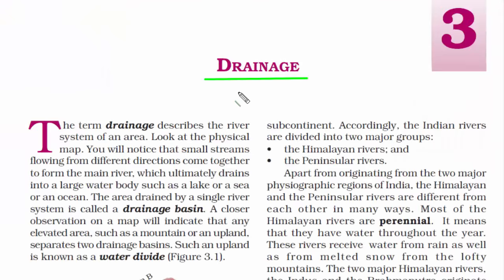Chapter 3: Drainage. The term drainage describes the river system of an area. Not just a river — if you make a channel through which water passes, that's a drainage.